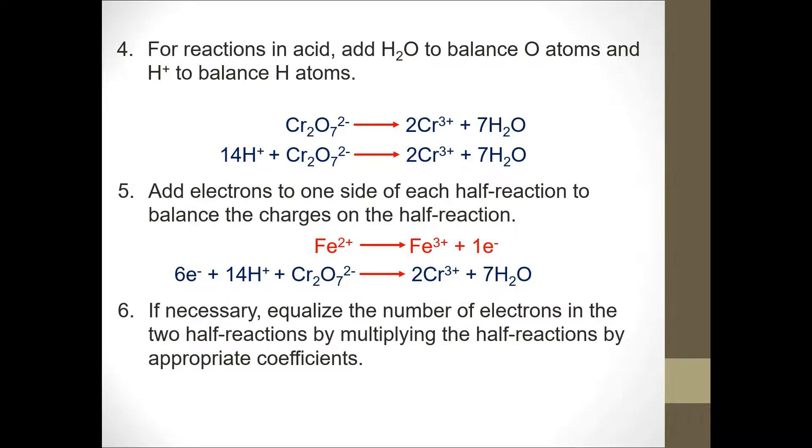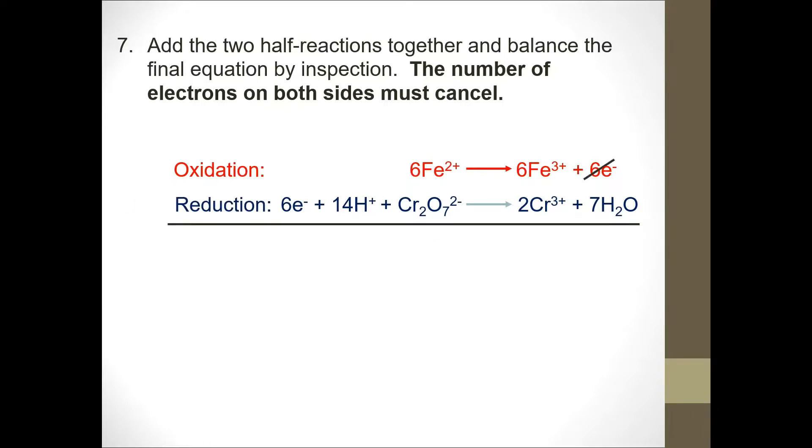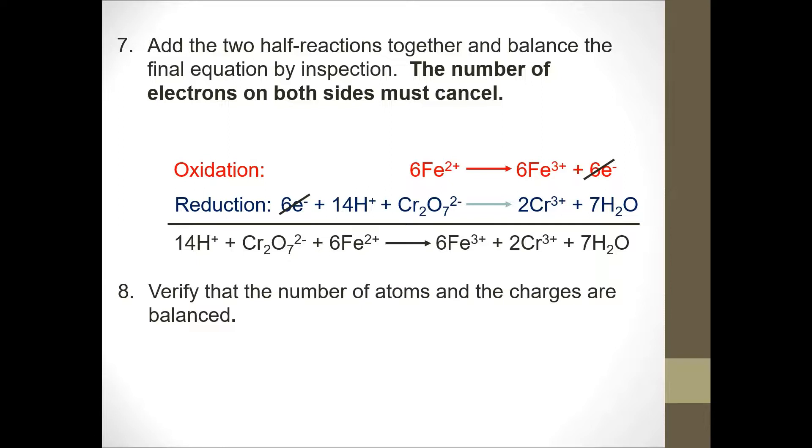If necessary, equalize the number of electrons by multiplying the half cell reaction with appropriate coefficient. So, for ferrum, you need to multiply by 6. You can just cross out the 6 electrons on the right and the 6 electrons on the left. And we are going to total them up. This is the final answer if the question asks you to write the answer in an acidic medium because you have 14 H+ there.